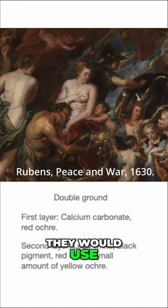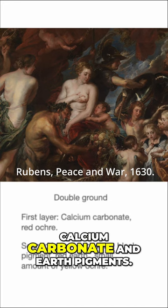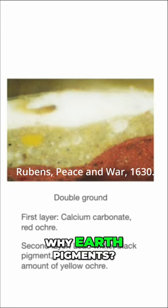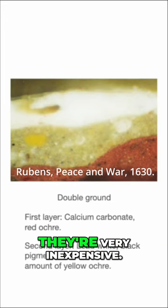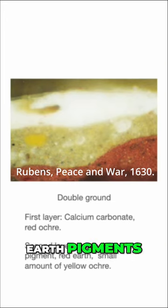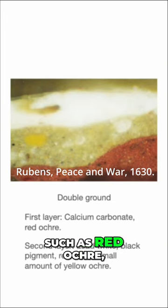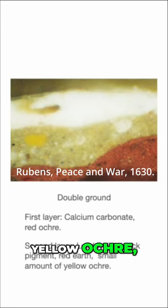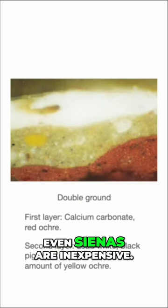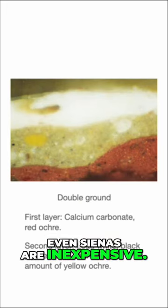As a general rule, they would use calcium carbonate and an earth pigment. Why earth pigments? Well, they're very inexpensive. Earth pigments such as red ochre, yellow ochre, brown ochre, and umbers, even sienas, are inexpensive.